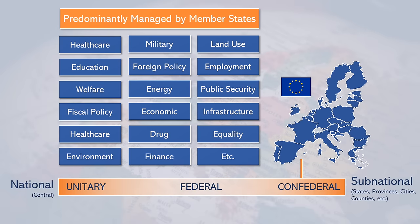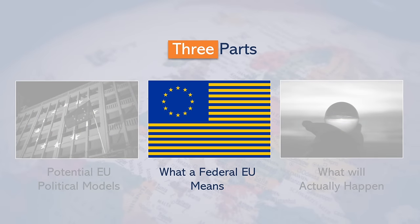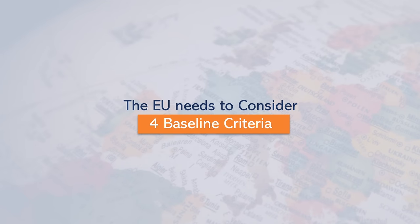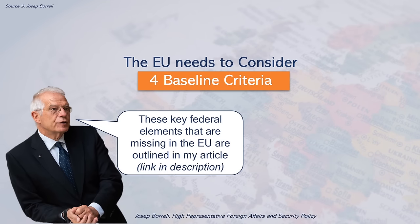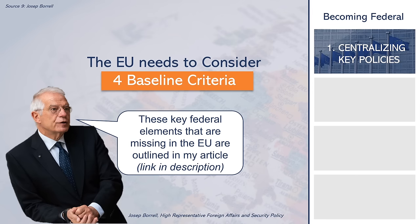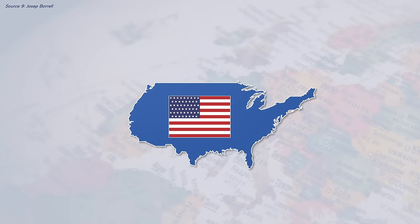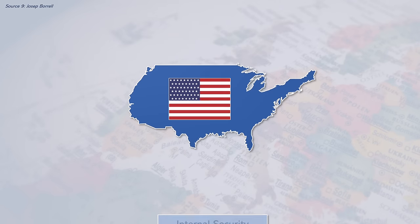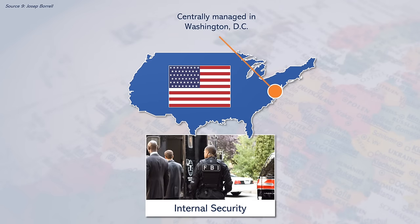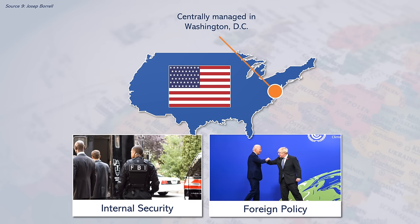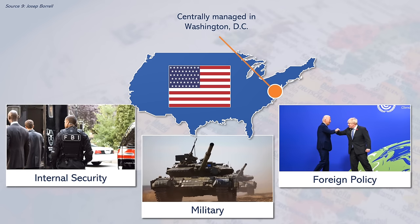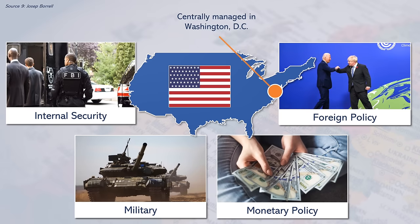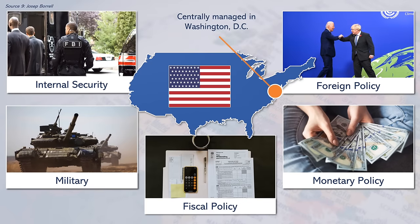This brings us to what a more federal EU would mean. To become a functioning federation, there are four baseline criteria the EU needs to work towards. Firstly, it needs to centralize key policies. In a typical federation such as the US, the following areas are managed centrally: internal security (e.g., the FBI), foreign policy, a common military for defense, monetary policy to control the money supply and interest rates, and a common fiscal policy to finance the provision of these public goods.